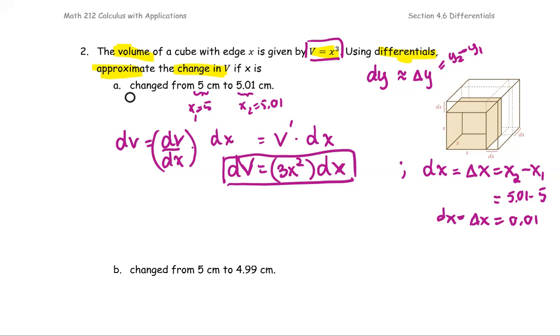Now we're going to compute the differential V. Compute at the original x, or at the beginning x value. That means we're going to replace x with the value of 5. So compute 3 times 5 squared, multiply by dx, which is the delta x for the value 0.01. Then we get 3 multiply by 25, multiply by 0.01, and it turns out to be 0.75, the unit is cubic centimeters.